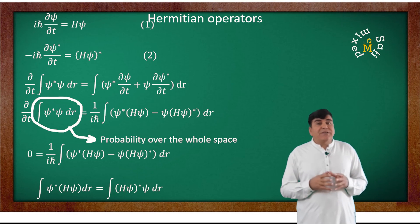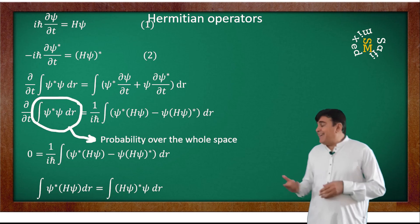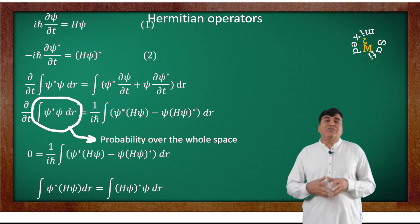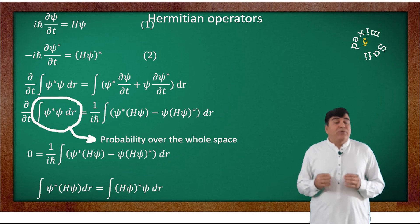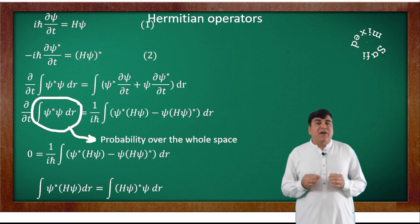Now, any operator that can be expressed in this form of the equation is called a Hermitian operator. Thus, the Hamiltonian H is a Hermitian operator.